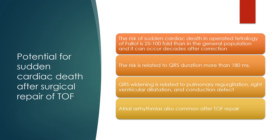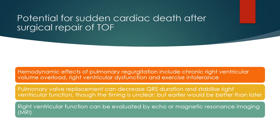The risk of sudden cardiac death in operated Tetralogy of Fallot is 25 to 100-fold greater than in the general population and can occur decades after correction. The risk is related to QRS duration of more than 180 ms. QRS widening is related to pulmonary regurgitation, right ventricular dysfunction, and conduction defect. Atrial arrhythmias are also common after TOF repair. Hemodynamic effects of pulmonary regurgitation include chronic right ventricular volume overload, right ventricular dysfunction, and exercise intolerance. Pulmonary valve replacement can decrease QRS duration and stabilize right ventricular function, with earlier intervention preferred. Right ventricular function can be evaluated by echo or magnetic resonance imaging.